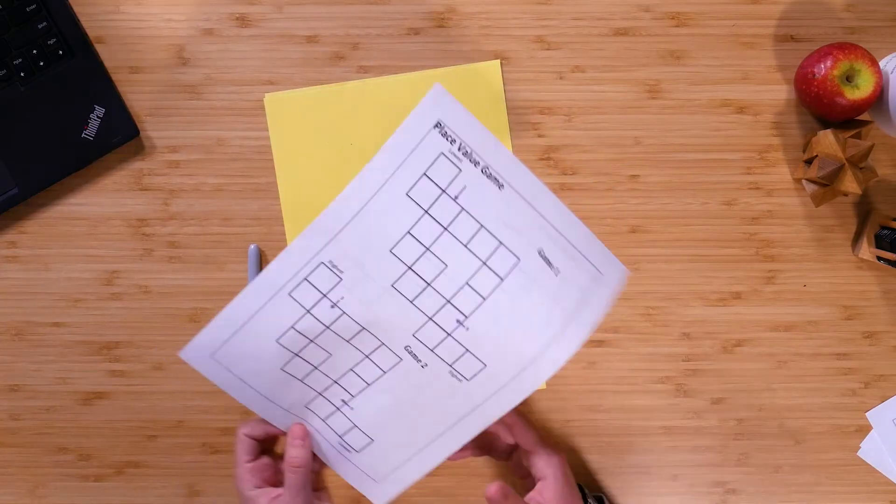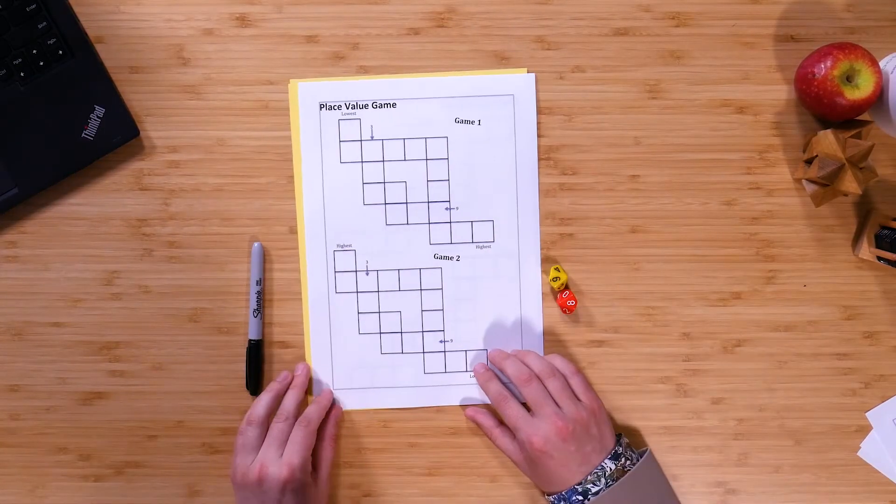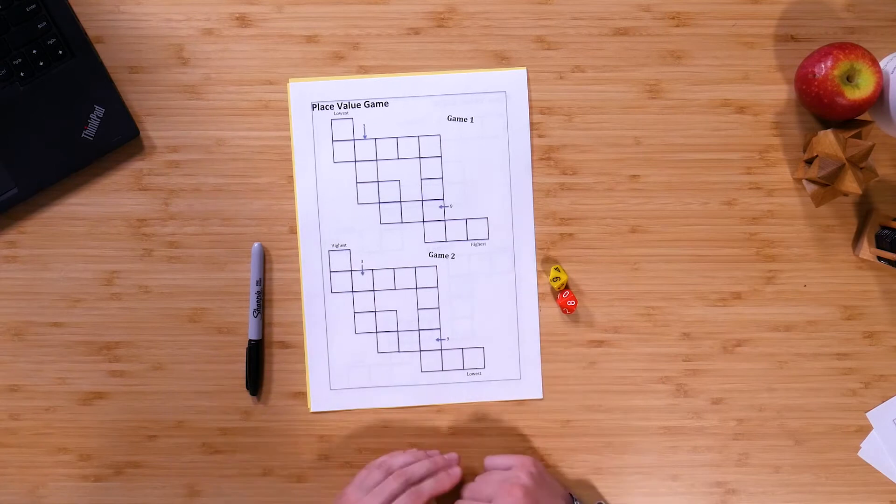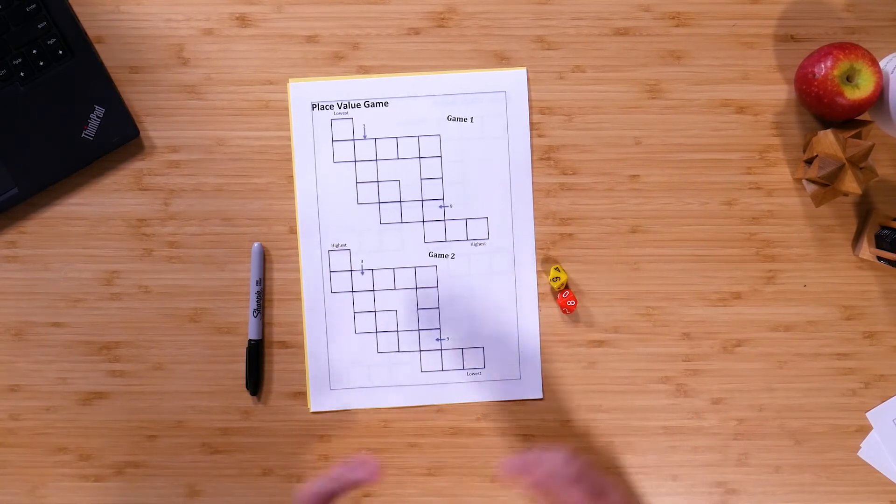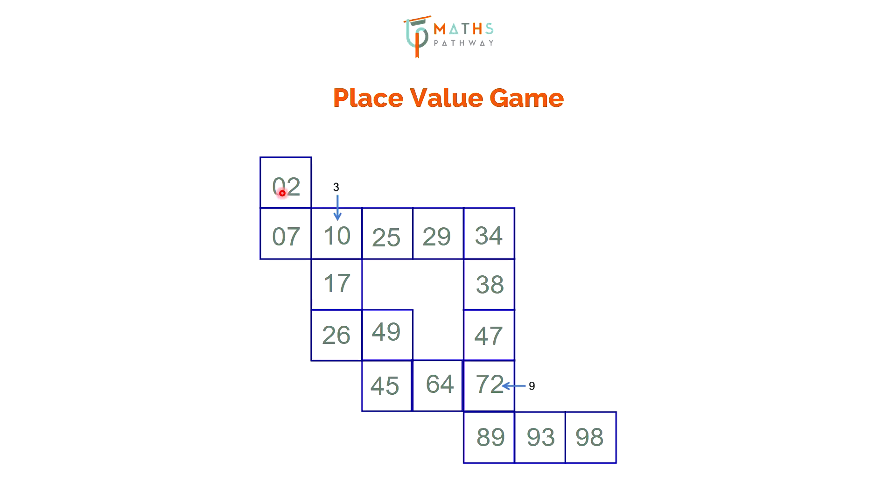Now there's another way that you can extend the activity as well, and that's through using the game boards that are on the second page of the handout, which of course you can find in the description below. And essentially how this works is you can see on your screen here that it's the same game as before, but essentially you've got two pathways now, and whatever you put in there has to work for both pathways.